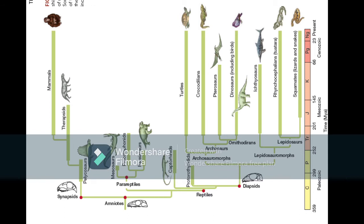Some propose chordates evolved from Annelida, others suggest Arthropoda, Mollusca, Echinodermata, or Hemichordata, but there is no definitive proof. There are still many missing links. One known link between dinosaurs and birds is Archaeopteryx — bird-like reptiles — from which scientists believe birds evolved. That concludes the Mesozoic era; now we move on to the Cenozoic era.